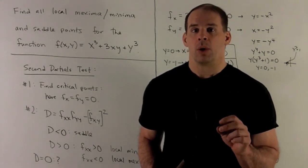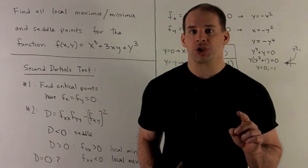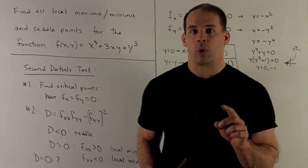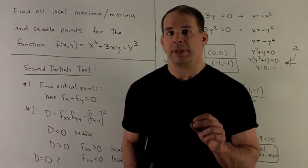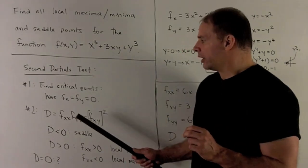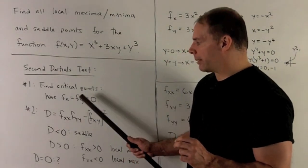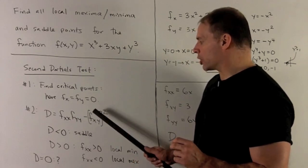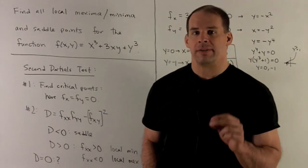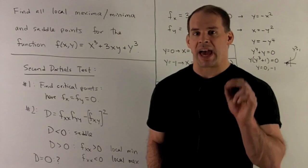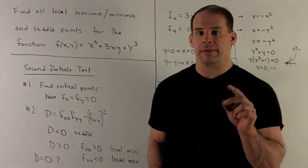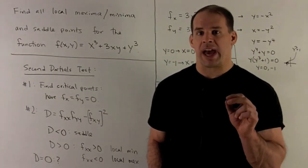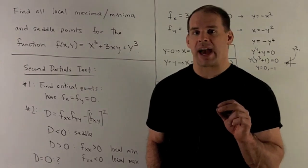For part 2, we're going to take the second partials. We're going to form a number D. D is going to be given by, you take the second partial with respect to x, multiply by the second partial with respect to y, subtract off the mixed partial squared. If that number's negative, I have a saddle point.